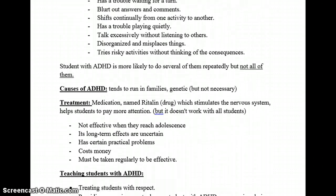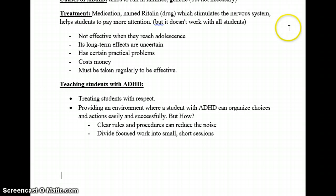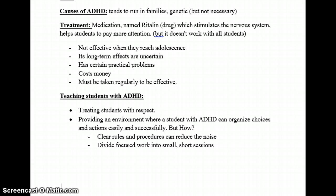Causes of ADHD tend to run in families — the cause is genetic. Treatment includes medication named Ritalin, which stimulates the nervous system and helps students pay more attention. However, it doesn't work with all students, is not effective when students reach adolescence, its long-term effects are uncertain, and it has practical problems such as cost and must be taken regularly to be effective.